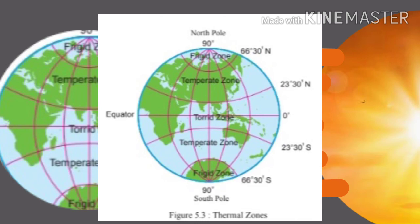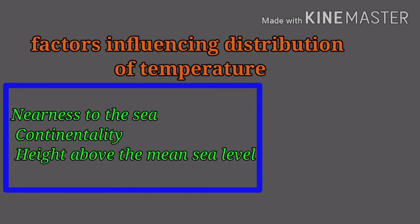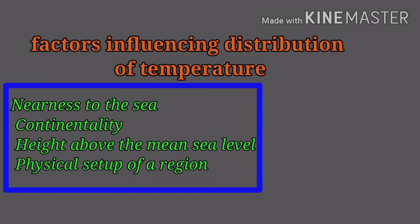Though latitude is the main factor, there are other factors also which influence the distribution of temperature. However, their effects are limited to a particular region. These factors are as follows: nearness to the sea, continentality, height above the mean sea level, and physical setup of a region are factors that lead to diversity in the climate of different regions.